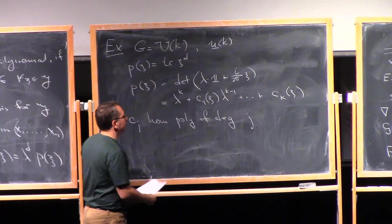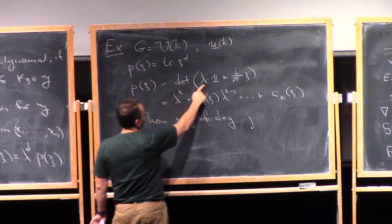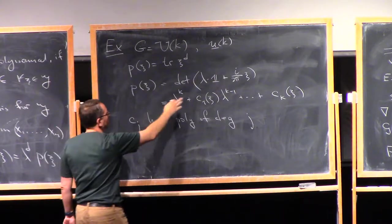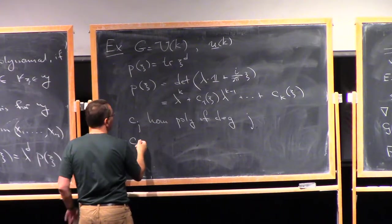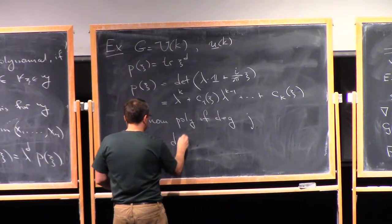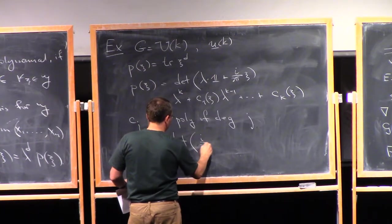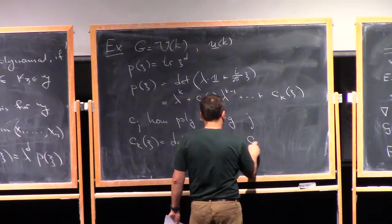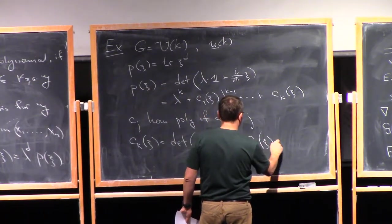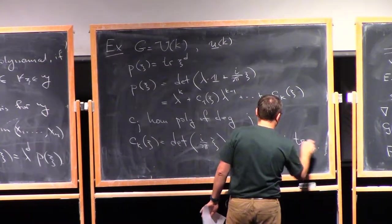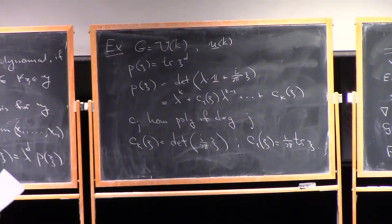Now, so we can compute easily certain terms. If you put lambda equals 0, what we get is c_k of xi is the determinant of xi, essentially. And for instance, c_1 of xi is just i over 2 pi trace of xi.